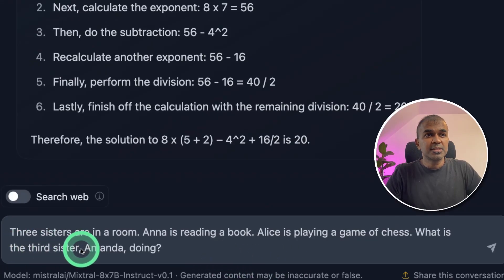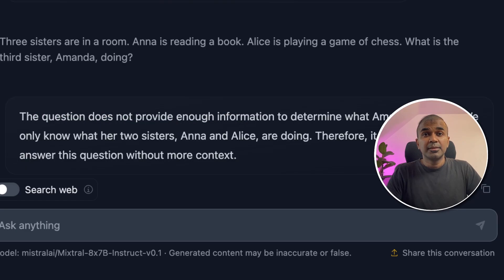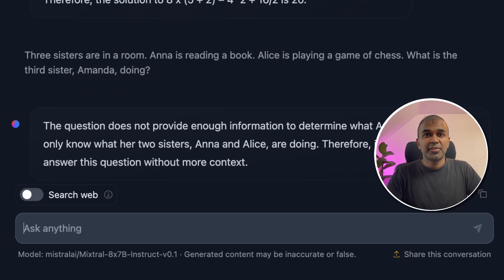Next, three sisters are in the room. Anna is reading a book. Alice is playing a game of chess. What is the third sister Amanda doing? The question does not provide enough information to determine what Amanda is doing. We only know what her two sisters Anna and Alice are doing. Therefore, it is impossible to answer this question without more context. This is wrong because Alice should be playing chess with Amanda. So this is a fail.